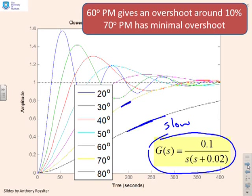For this case, 70 degrees is probably not good enough. With 60 degrees, you get this plot, which gives about 10% overshoot. Between 60 and 70 degrees is about right.